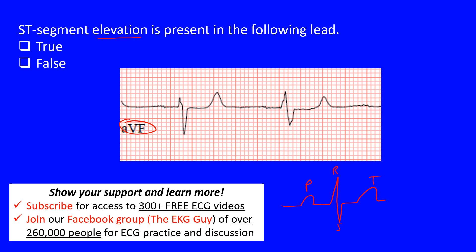There are a number of segments and intervals. One segment runs from the end of the P wave to the beginning of the QRS complex — we call that the PR segment. The PR interval includes both the P wave and the PR segment.